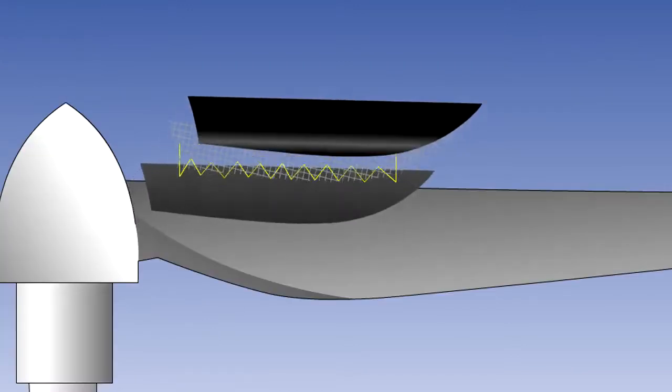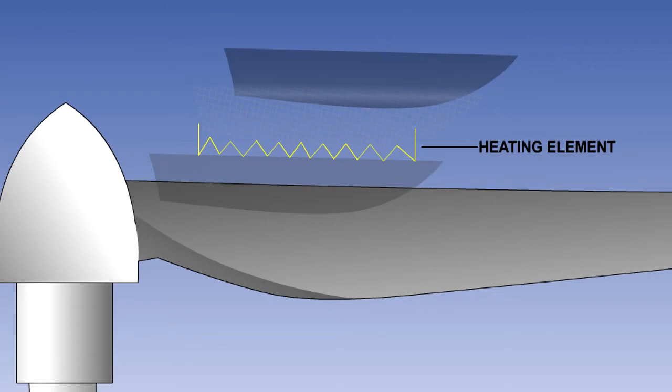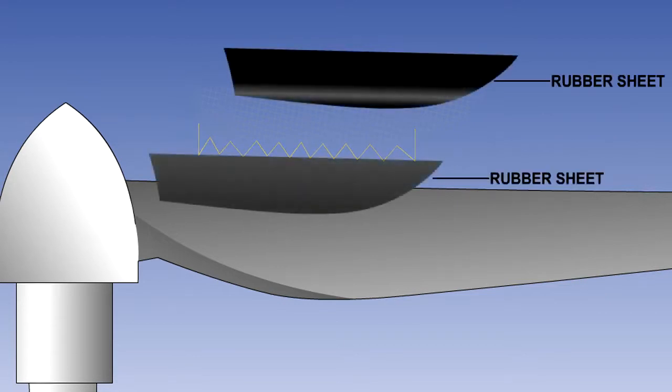In a common installation, the heating element wires are interwoven with glass threads, which form a glass cloth base, which is cemented between sheets of rubber.